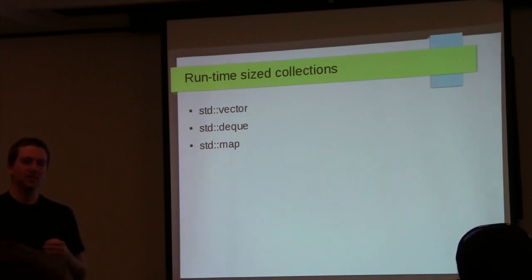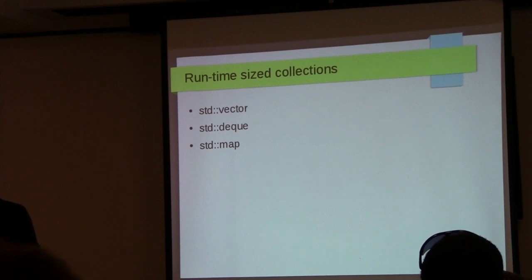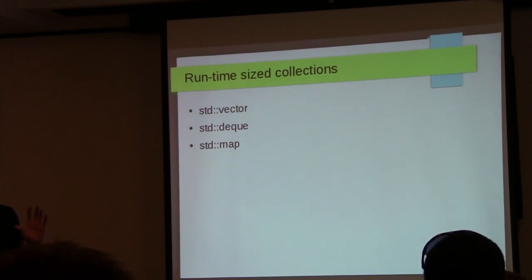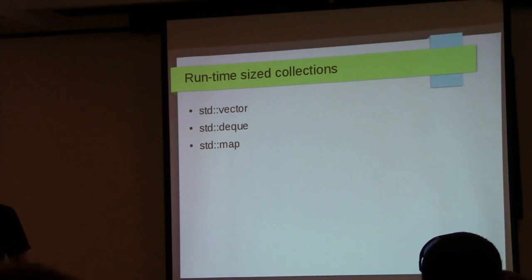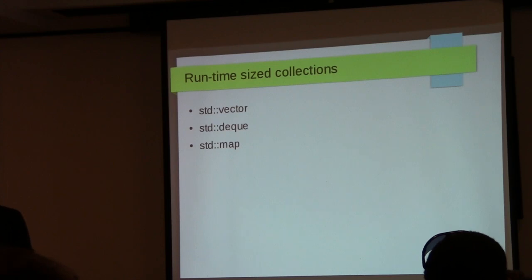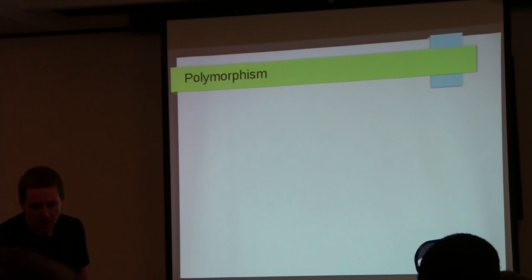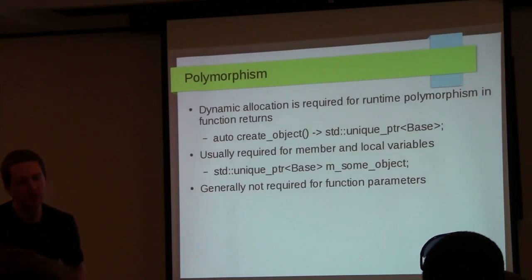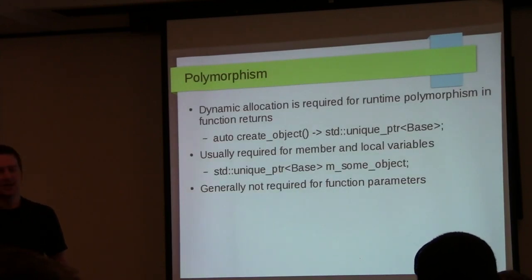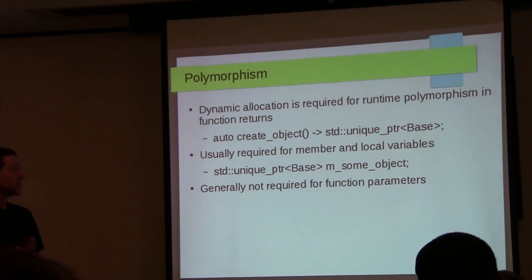Why would we use dynamic memory? The obvious one is runtime-size collections — vector, deque, map, set — all internally use dynamic allocation. I'll get into the performance of that later. But first I want to go to polymorphism, because that's often the first reason people reach for dynamic allocation.